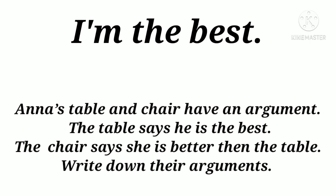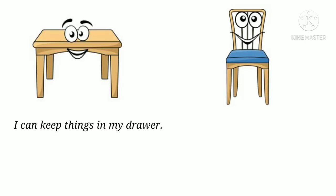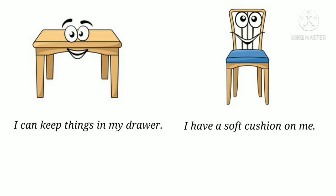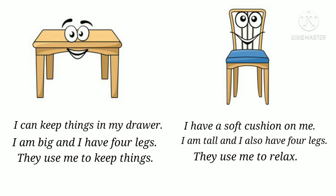Let's move on to another activity: 'I'm the Best.' Anna's table and chair have an argument. The table says he is the best; the chair says she is better than the table. Write down their arguments. The table said, 'I can keep things in my drawer. I am big and I have four legs.' The chair replied, 'I have a soft cushion on me. I am tall and I also have four legs. They use me to relax.' They continued their argument.